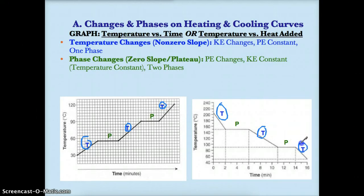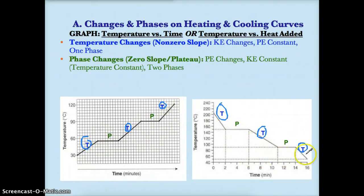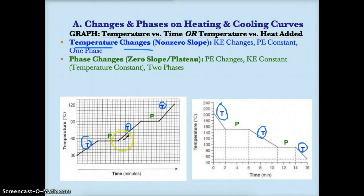In all six of these sections with these blue T's, you'll notice that you have sloping lines going upward — upward, upward — and downward, downward, and downward. In all six of these cases, you should notice that the temperature is changing. For example, the temperature is changing from 30 to about 55, and from about 55 to 90, and so on. In all six cases you'll see that the temperature is changing because you have a non-zero slope.